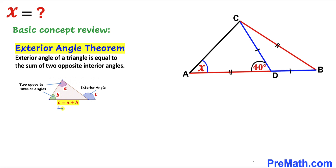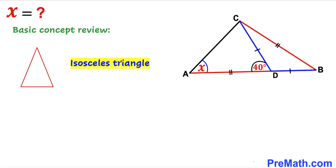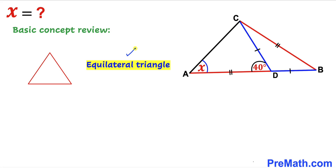So we can write angle C equals angle A plus B. Here's an example: this angle outside is our exterior angle and that is going to be equal to the sum of these two opposite interior angles, 50 plus 60 degrees, which gives us 110 degrees. Now let's talk about the isosceles triangle — these two side lengths are congruent and therefore their opposite angles are congruent as well.